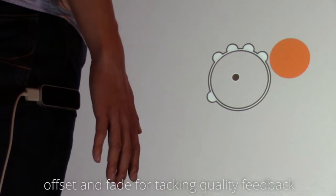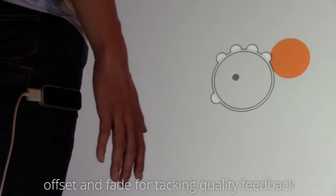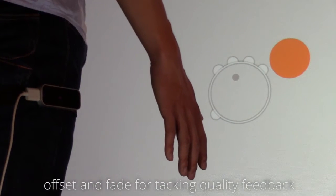The ring offsets from the center as the hand approaches the tracking boundary and begins to fade away as tracking becomes less reliable.